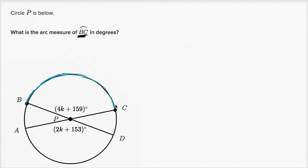The arc measure is going to be the exact same measure in degrees as the central angle that intercepts that arc. So it's going to be the same thing as the measure of this central angle, which is 4K plus 159 degrees. If we can figure out what K is, we'll know the central angle measure, and that will be the same as the arc measure.